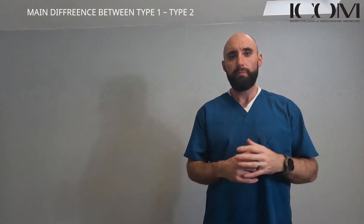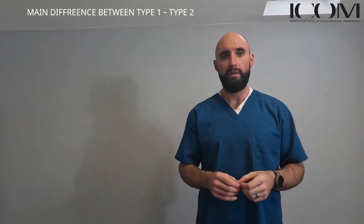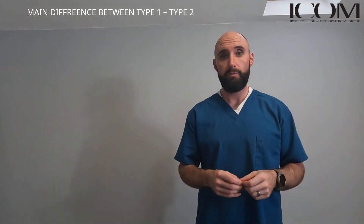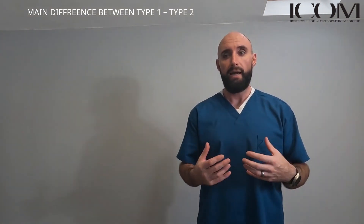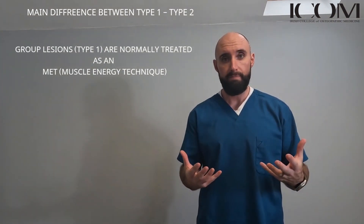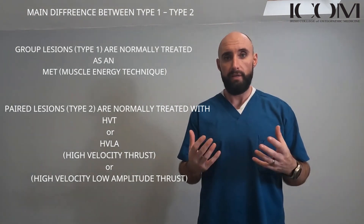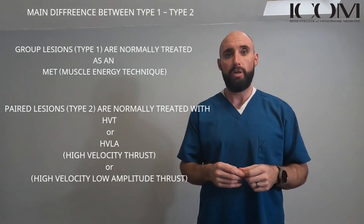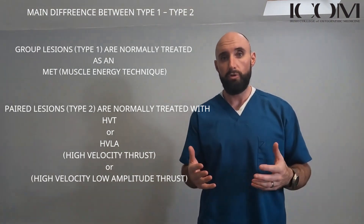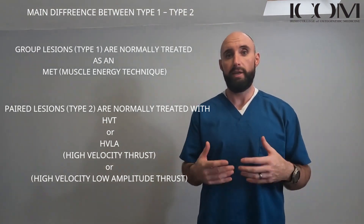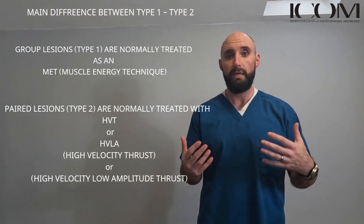One of the main differences between a group lesion, which is a Type 1, and a Type 2 lesion is that a group lesion is generally treated with an MET, whereas a paired lesion — your Type 2 — is generally treated with an HVT. You can MET a Type 2, but we generally treat Type 2 with HVT and Type 1 with MET.